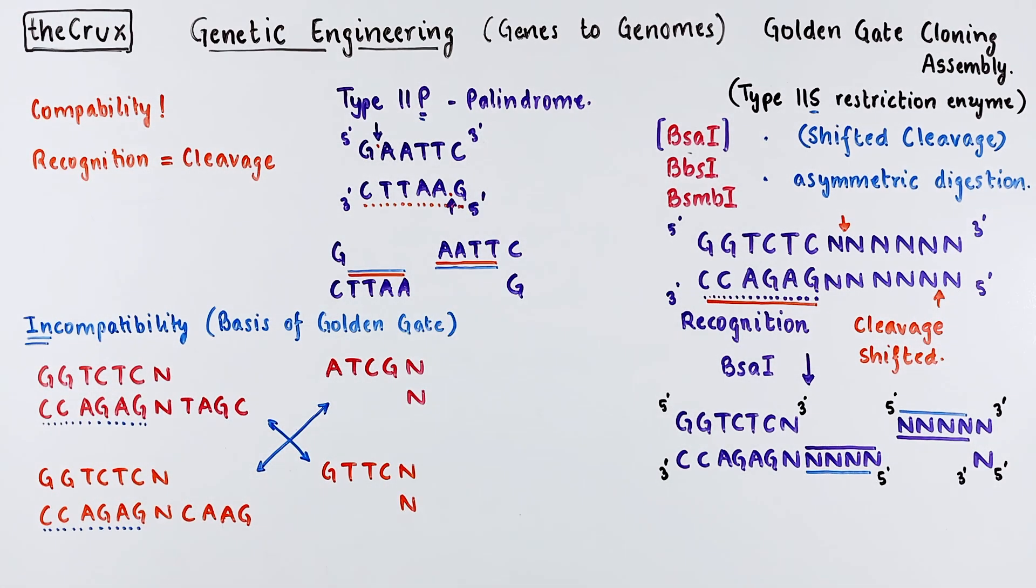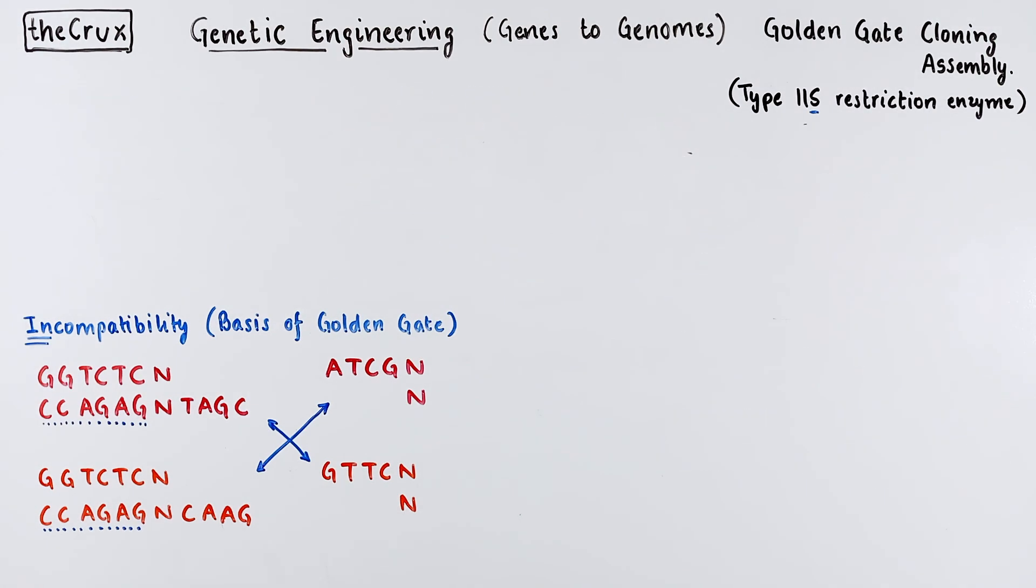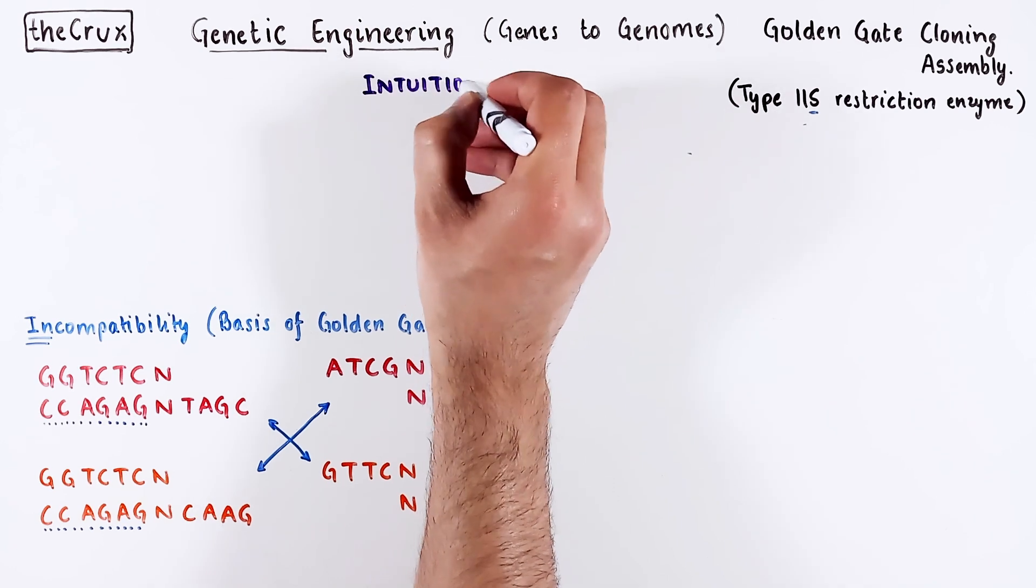This again is in contrast to the example of 2P enzymes. Hopefully this is clear. Now let's develop an intuition for how we can use Golden Gate cloning.